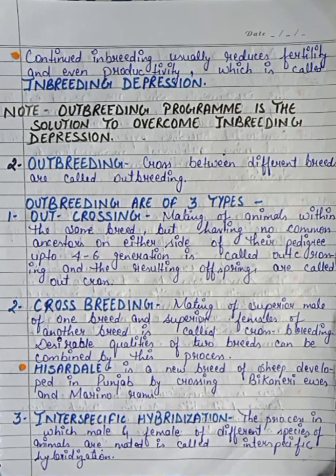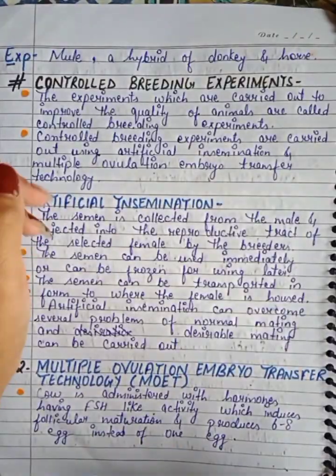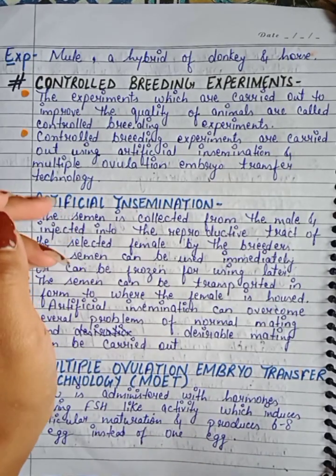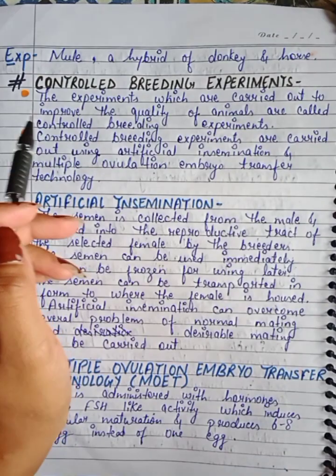Merino is the male sheep and Bikaneri ewes is the female sheep. Third is interspecific hybridization: the process in which male and female of different species are mated is called interspecific hybridization. An example is the mule, which is produced by mating a donkey and a horse.